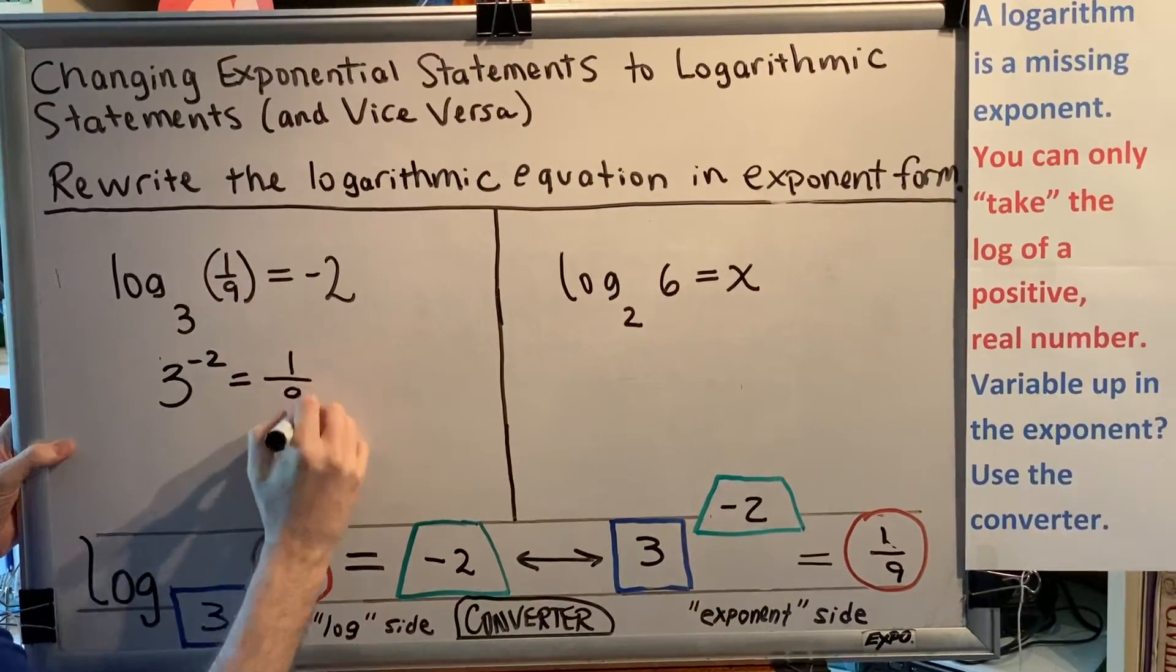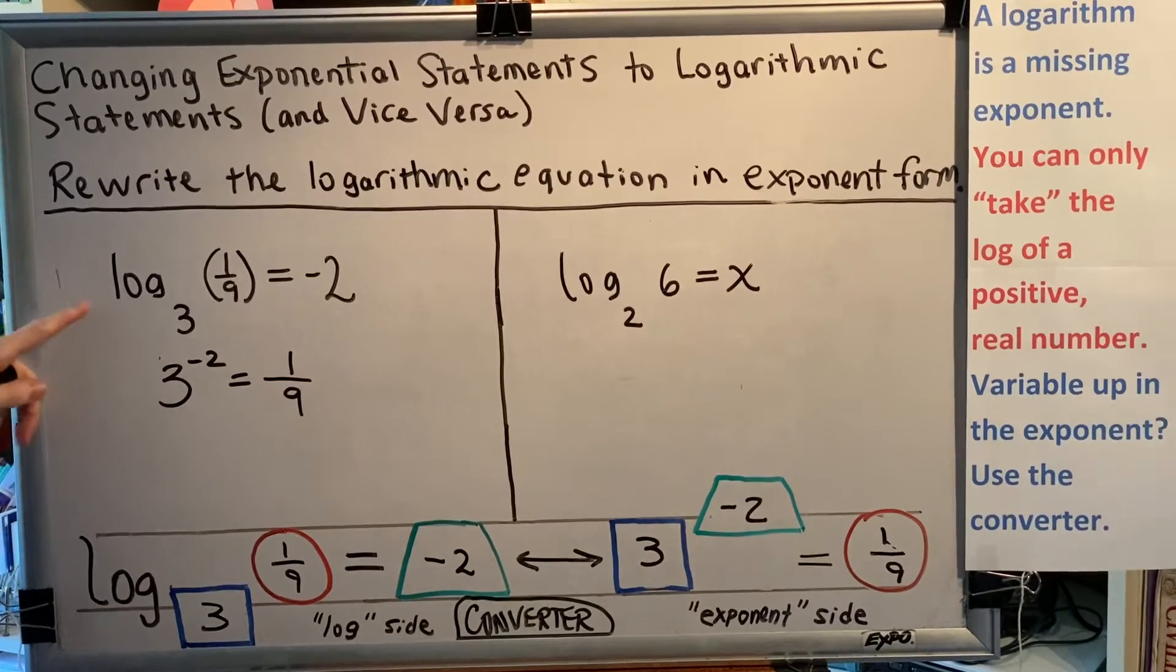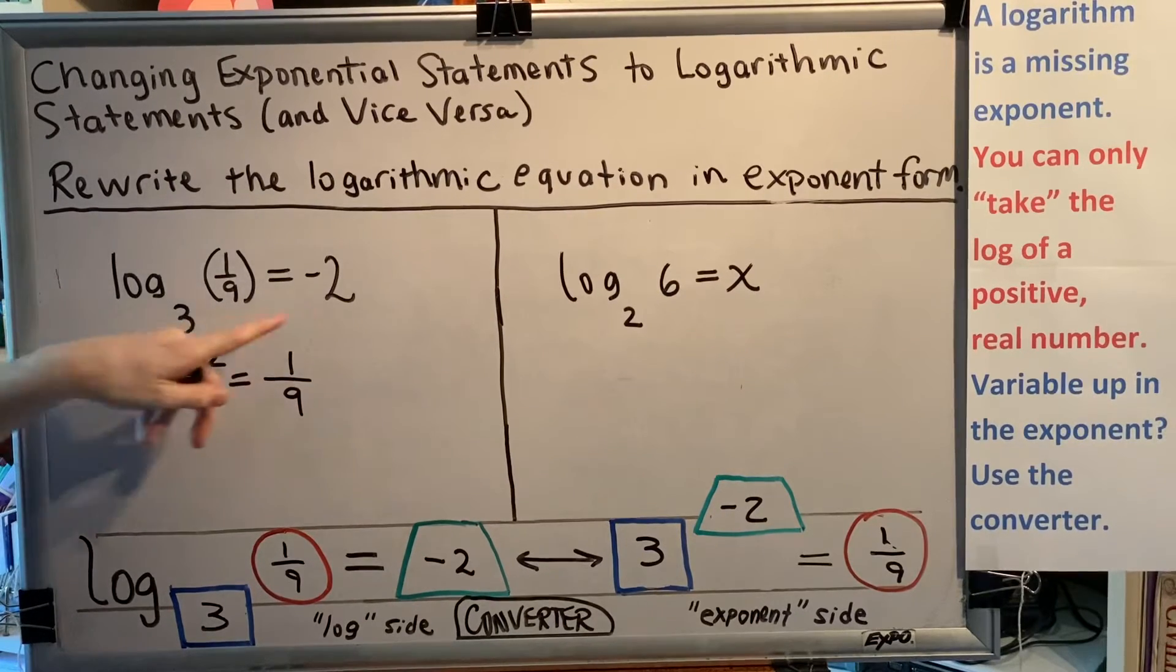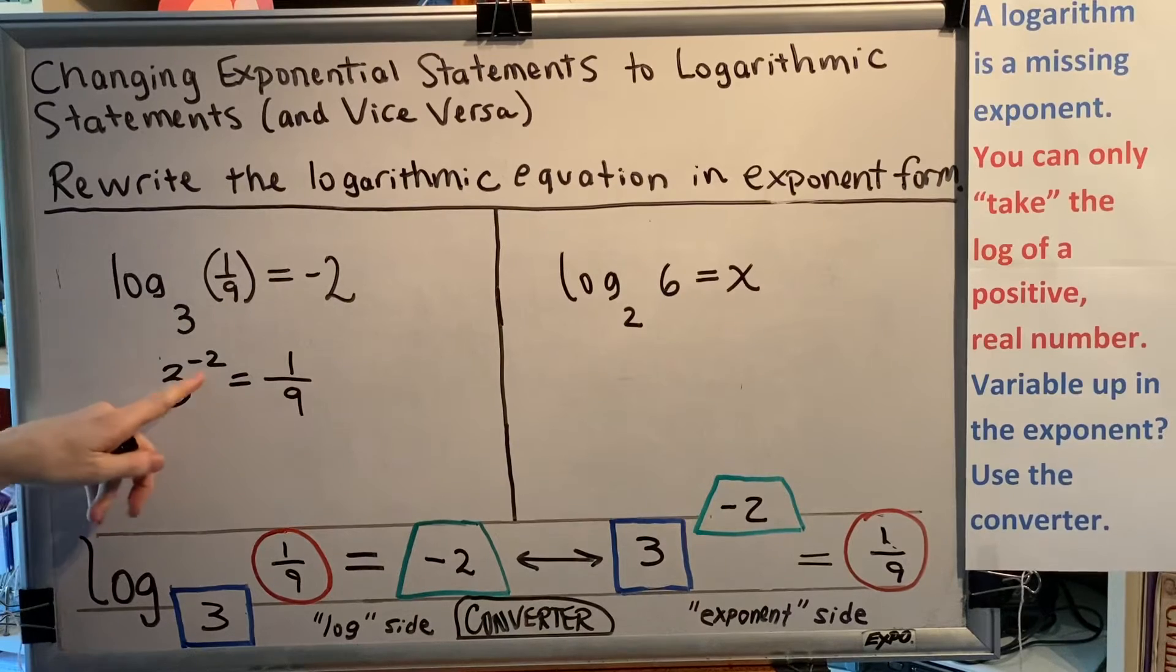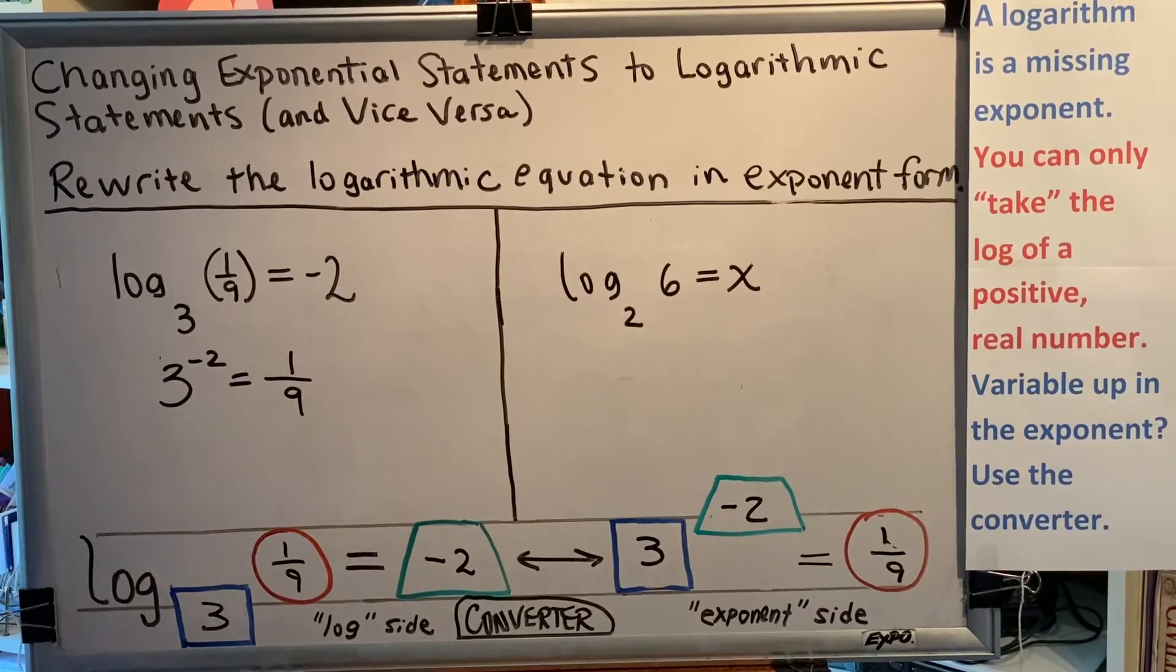By the way, both of these are true statements. Log base 3 of 1/9 really does equal negative 2, and 3 to the negative 2 power really does equal 1/9. This is our final answer for this first problem.